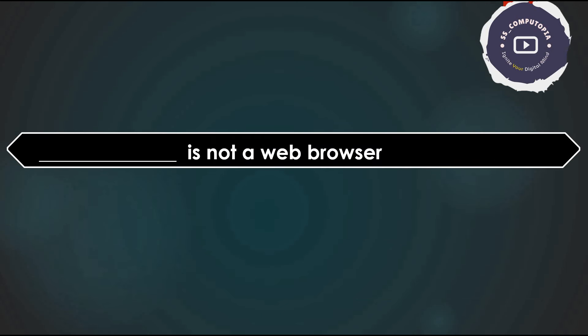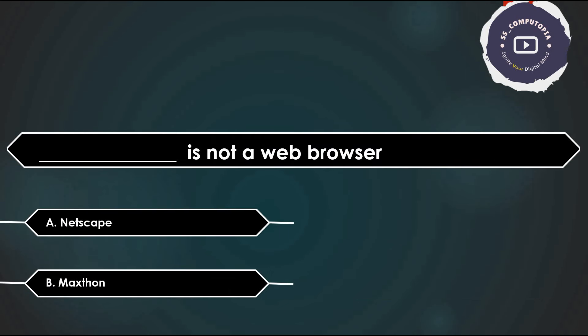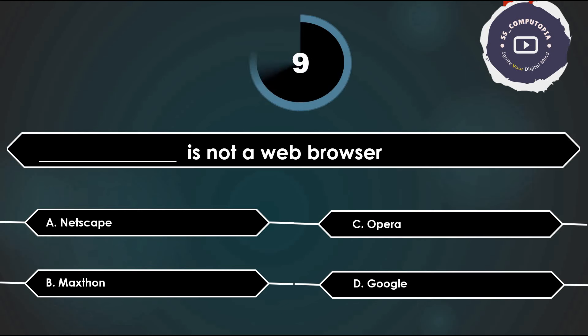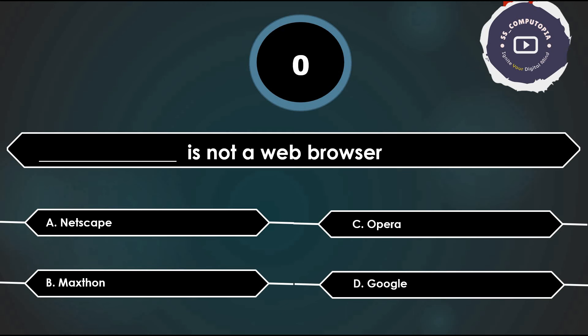Which is NOT a web browser — Netscape, Maxcon, Opera, or Google? Answer is Google. Google is a search engine or website, not a web browser. Google Chrome is the web browser.